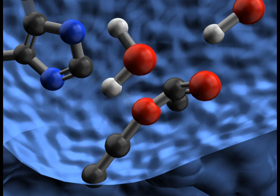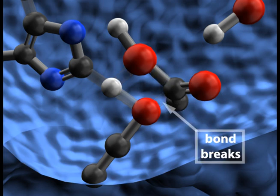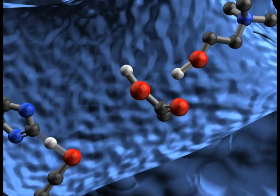Water moves into place and donates a proton to serine. The bond between this carbon on acetate with serine breaks, and acetate forms a new bond with the oxygen from the water molecule. This releases the acetate molecule from the active site.